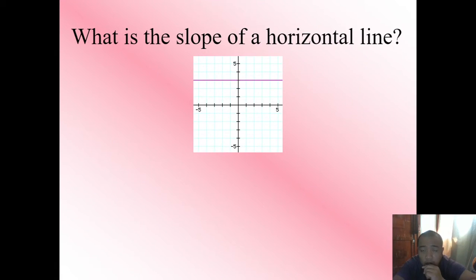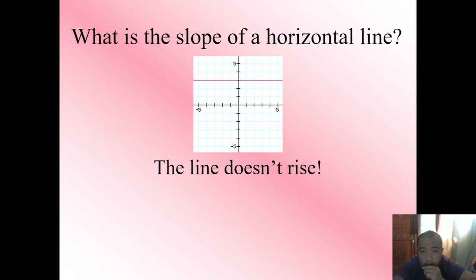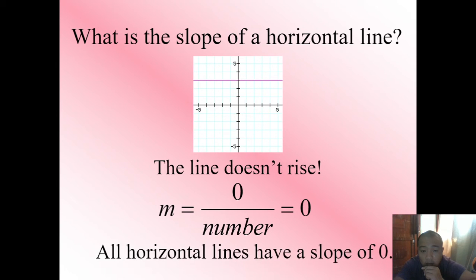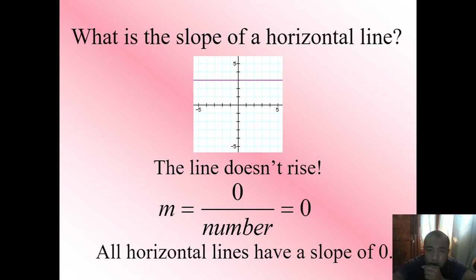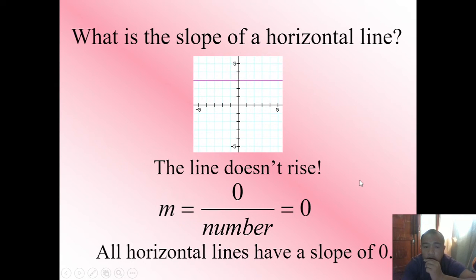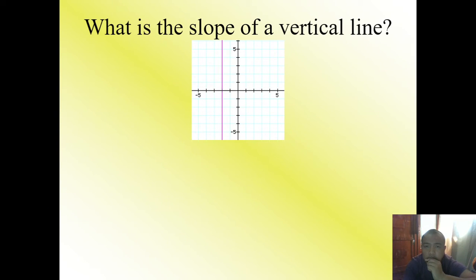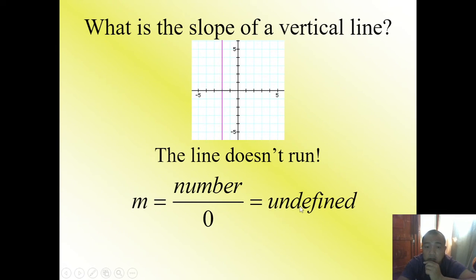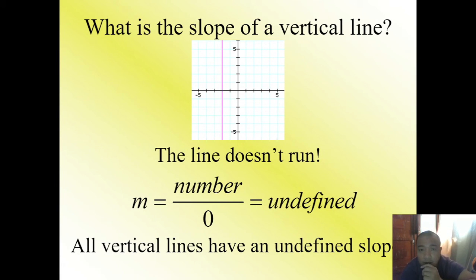What if the given line is horizontal? What is the slope of a horizontal line? The line doesn't rise, so we have zero over a number, which equals zero. Therefore, the slope of a horizontal line is always zero. All horizontal lines have a slope of zero because they don't rise — zero divided by any number is still zero. What about a vertical line? The line doesn't run, so any number divided by zero is undefined. All vertical lines have an undefined slope.